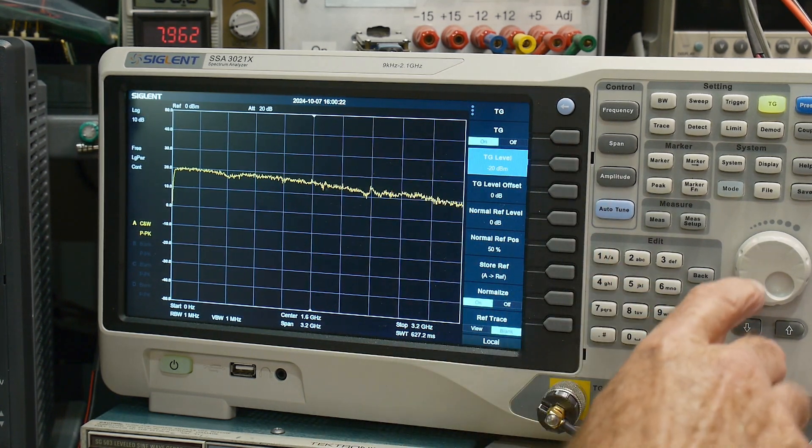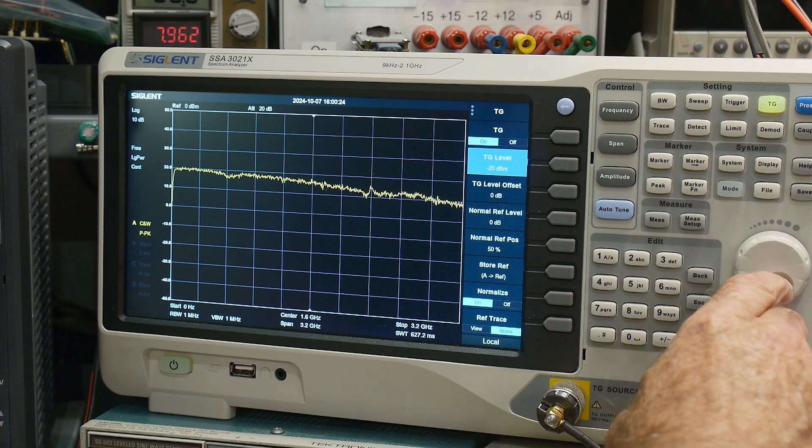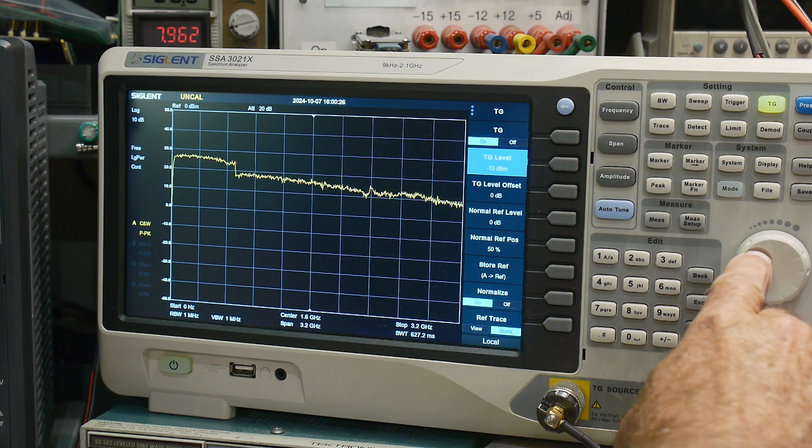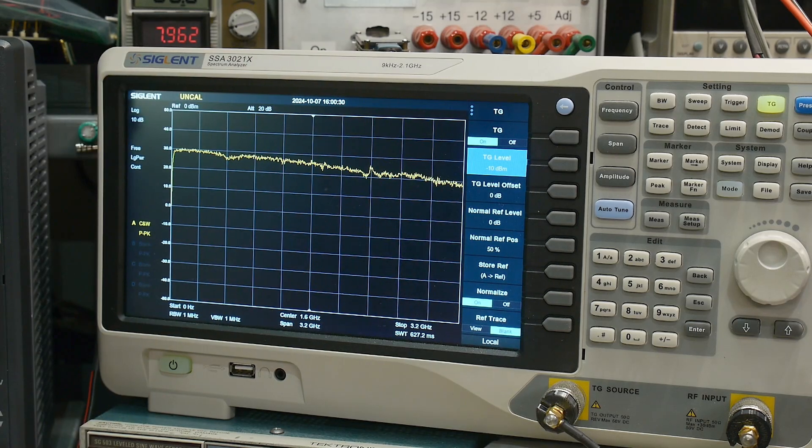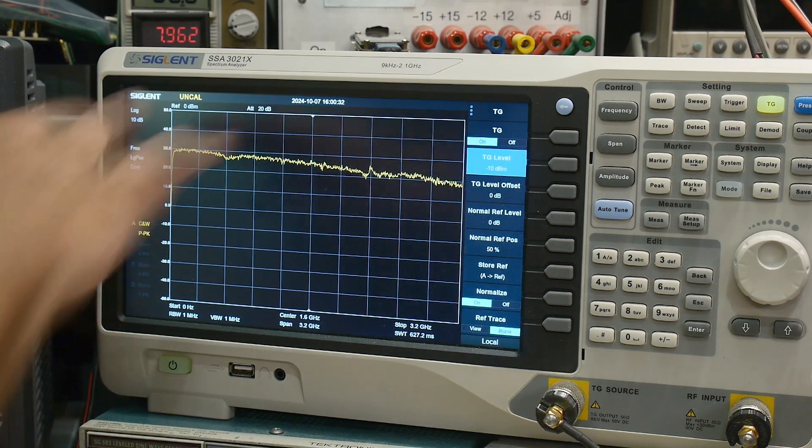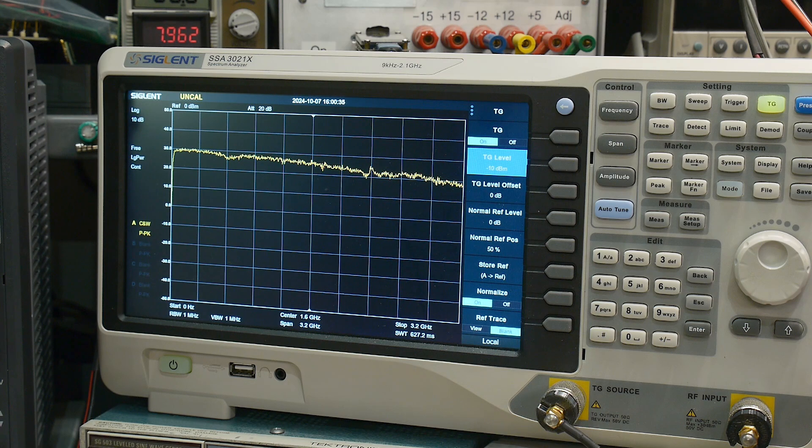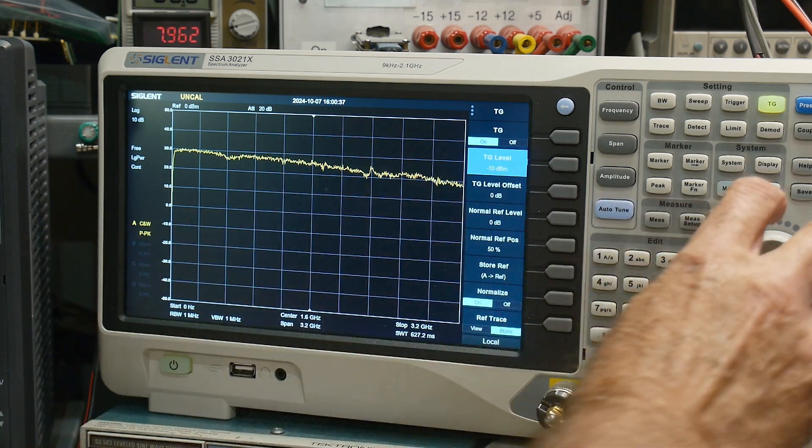It should be pretty flat. Let's go ahead and change the tracking generator level and let's just move it up. See if anything changes. I'll put it here. It was going in at minus 20 dB. Here's minus 10 dB. Still has that roll off.